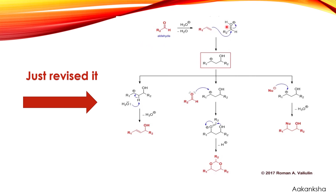To revise: the aldehyde gets protonated by the protic acid; attack on the alkene gives the beta-hydroxy carbocation. First, by formation of allylic alcohol — the proton is abstracted by water, the double bond is created, and we get allylic alcohol. Second, in the presence of excess formaldehyde acting as nucleophile, ring closure gives 1,3-dioxane. Third, direct nucleophilic attack on the carbocation gives the alcohol as product.